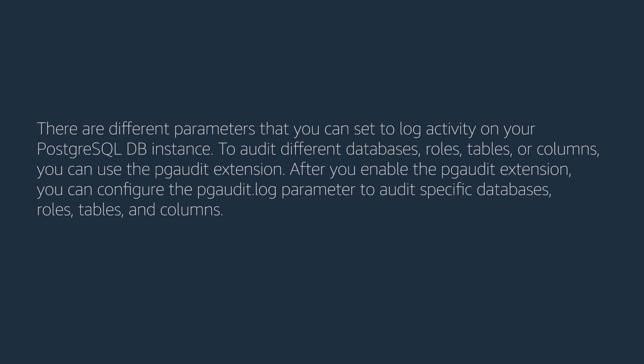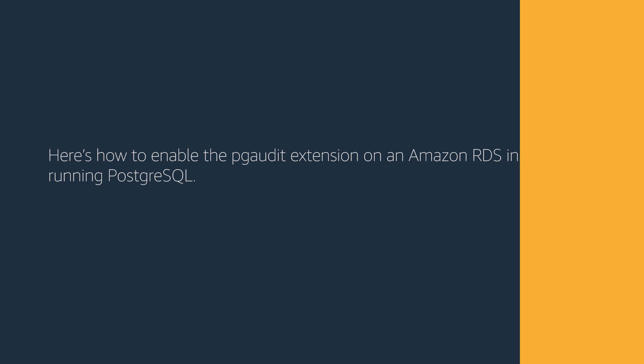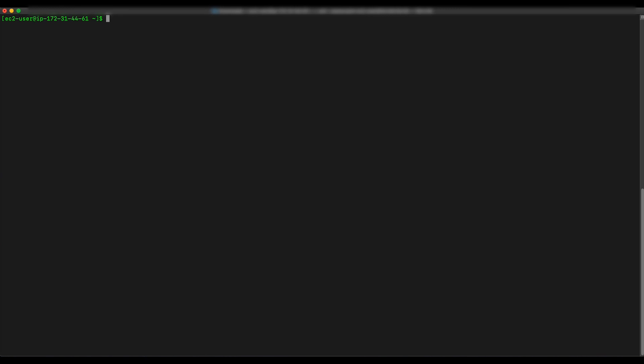After you enable the PG Audit extension, you can configure the pgaudit.log parameter to audit specific databases, roles, tables, and columns. Here's how to enable the pgaudit extension on an Amazon RDS instance running PostgreSQL. Create a specific database role called rds_pgaudit by running the following command.